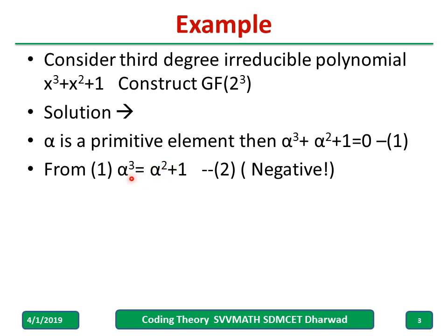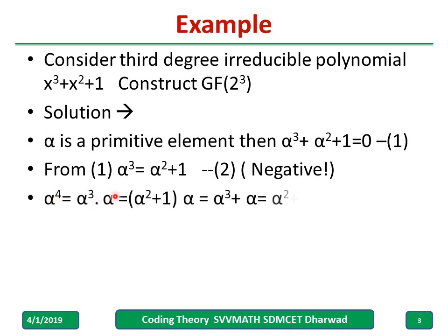In general, when writing in mod 2, we write alpha cubed equal to minus alpha squared minus 1, but in mod 2 we do not consider negatives — everything is positive. Alpha raised to 4 equals alpha cubed times alpha. I fill in the value of alpha cubed into alpha, and then I multiply, replacing alpha cubed with alpha squared plus 1.